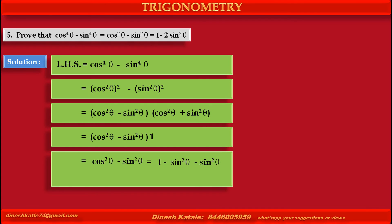This gives us cos square theta minus sin square theta. Replacing the first term cos square theta by 1 minus sin square theta, we get 1 minus sin square theta minus sin square theta, that is, 1 minus 2 sin square theta, which is equal to the right hand side.